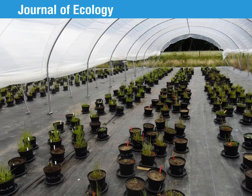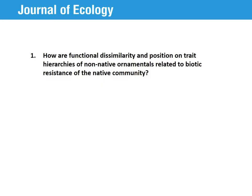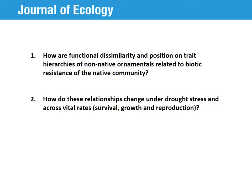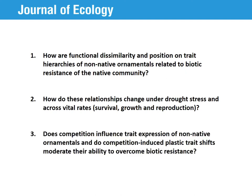Here, we tested through a large mesocosm experiment and trait analysis, when and how biotic resistance can prevent invasion of European ornamental non-native plants. We specifically addressed three main questions. First, how are functional dissimilarity and position on trait hierarchies of non-native ornamentals related to biotic resistance of the native community? Second, how do these relationships change under drought stress and across vital rates? And third, does competition influence trait expression of non-native ornamentals, and do these plastic trait shifts moderate their ability to overcome biotic resistance?